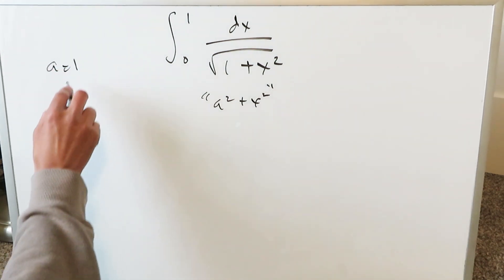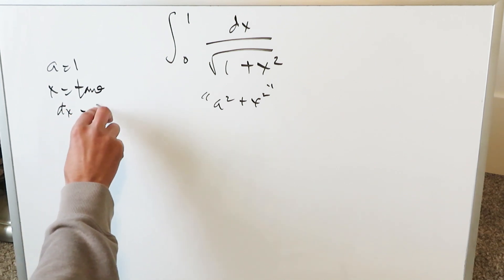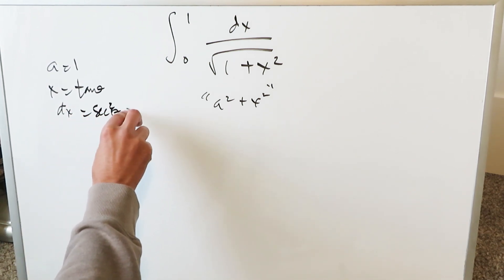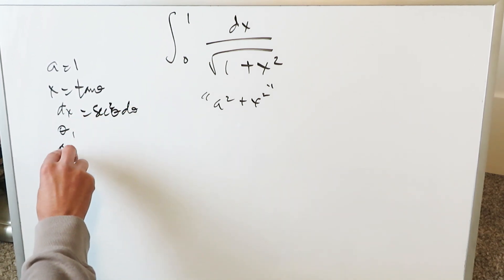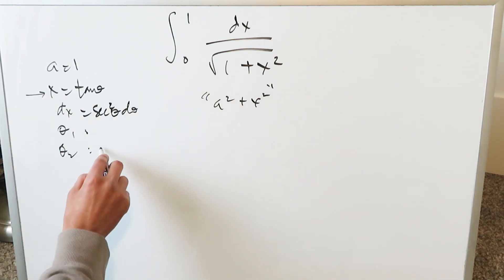A here is equal to 1. x is equal to tan theta. dx is equal to secant squared theta d theta and then theta 1 and theta 2 with regards to 0 and 1. Inverse tan of 0 is 0. Inverse tan of 1 is pi over 4.